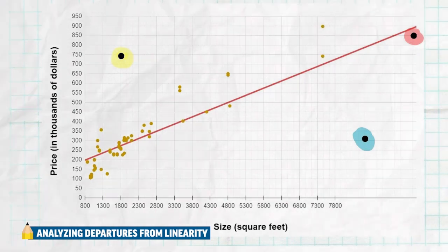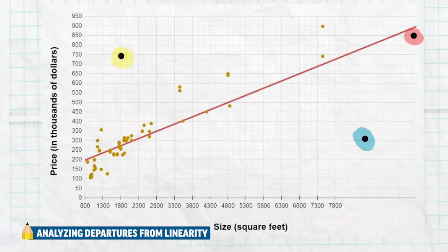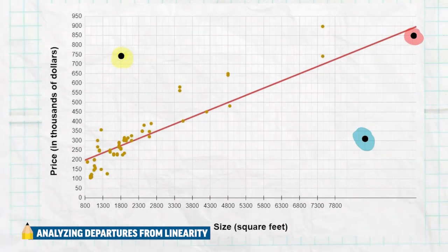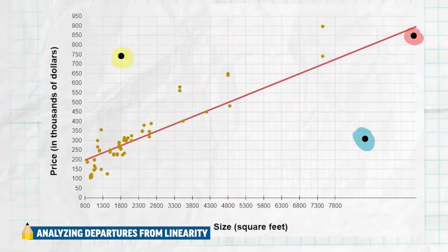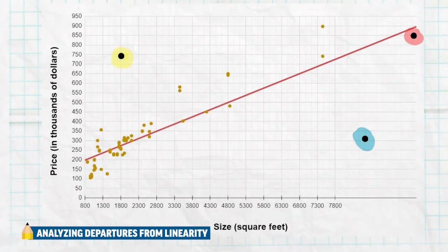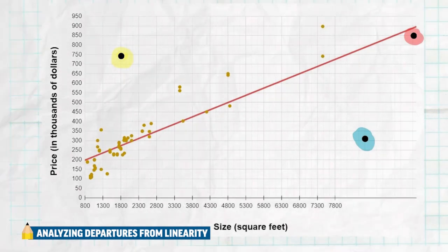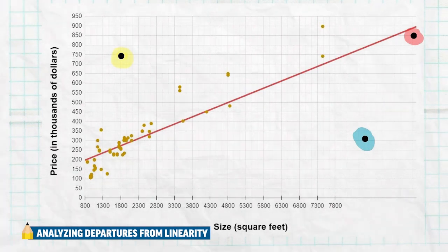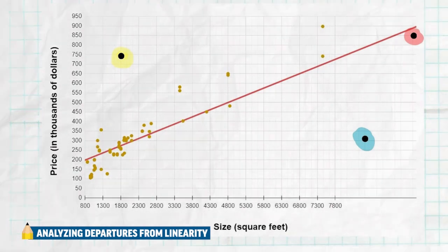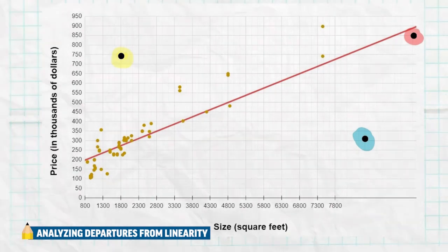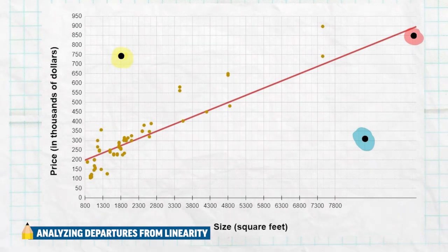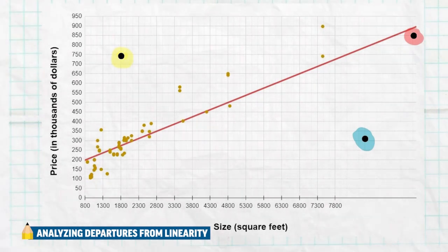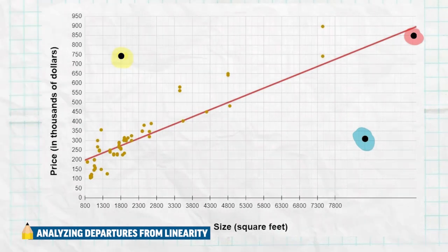Then we see the point in blue. This is an outlier in the X direction. It is a very large square footage house that has a very average price. It's about an 8,000 or more square foot house, and it only has a price tag around $300,000. That again doesn't fit the pattern — a house that's really big should have a much higher price. So it's an outlier in the X value.